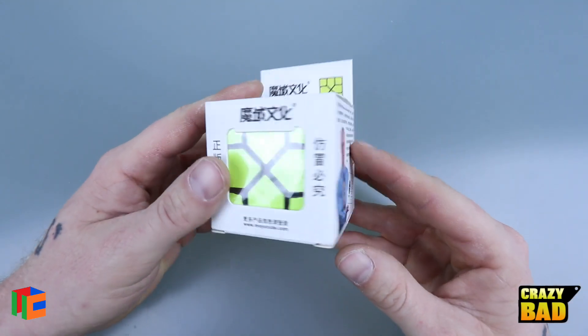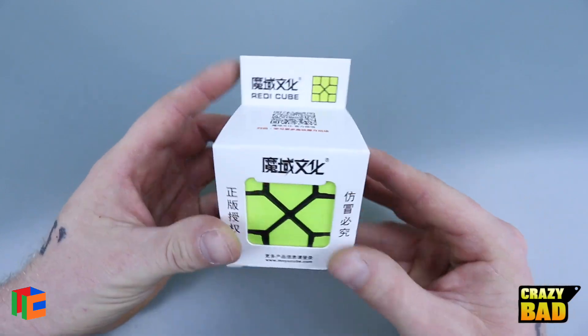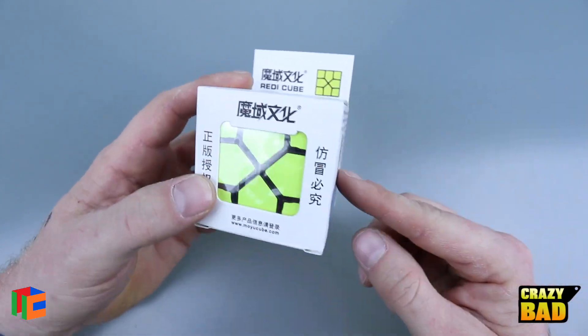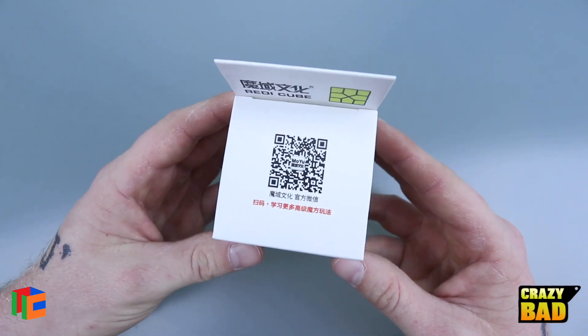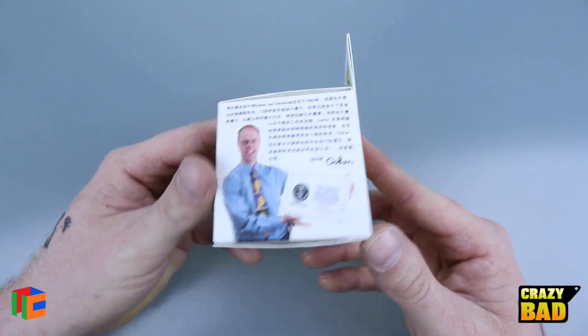Hello everybody, in today's video we're going to be checking out a puzzle that's been out for a little while and I've always wanted to review this. I got my hands on one at the cubicle, so I'm going to go ahead and review this thing right now. It is Oscar Van Daver's ReadyCube which has been mass-produced by Moyu.